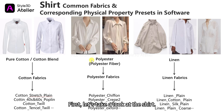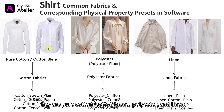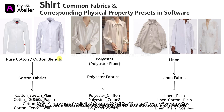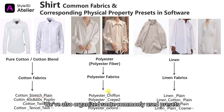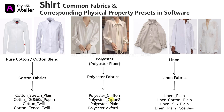First, let's take a look at the shirt. We've listed three of the most common materials: pure cotton, cotton blend, polyester, and linen. These materials correspond to the software's presets for cotton, polyester, and linen fabrics. We've also organized some commonly used presets and presets with obvious changes. For a clearer view, let's move on to the software and demonstrate.